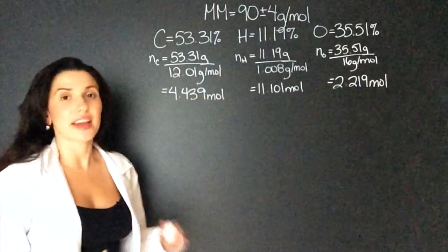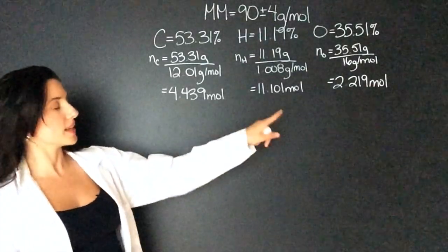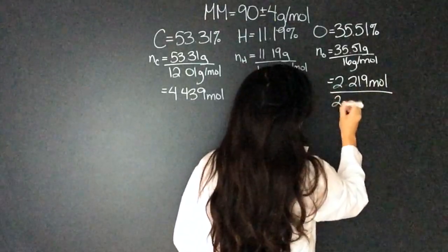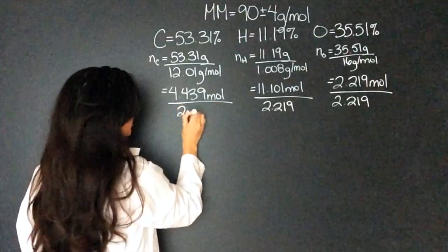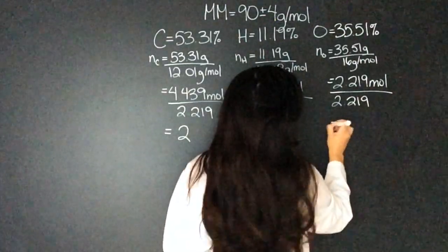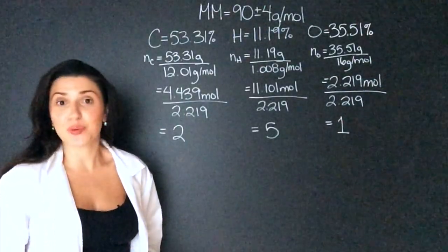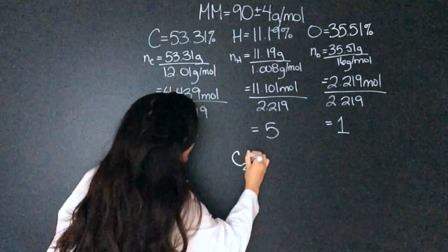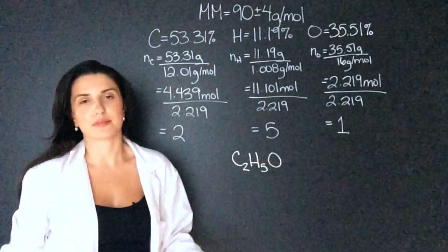Now we have to find the ratio. So we have to divide all these numbers by the lowest number. The lowest one is oxygen at 2.219. So let's divide them all by 2.219. 2, 5, and 1. Now these are already in whole numbers. So we know the empirical formula. We have C2H5O. We could put the 1, but we don't need to.